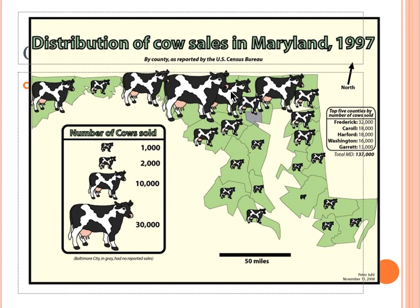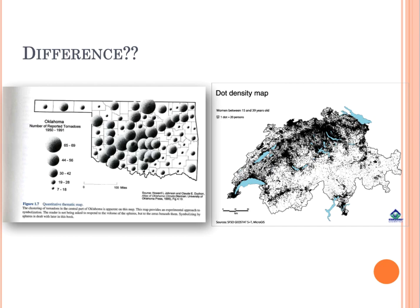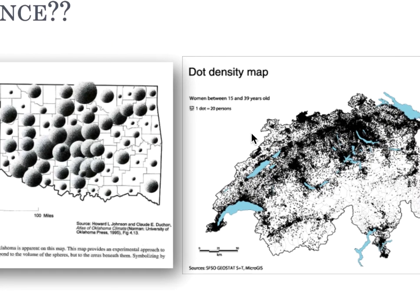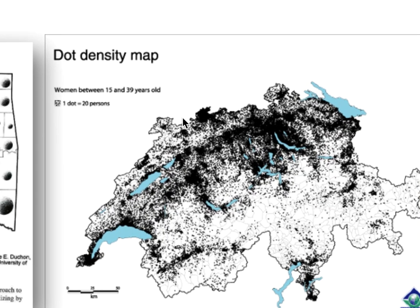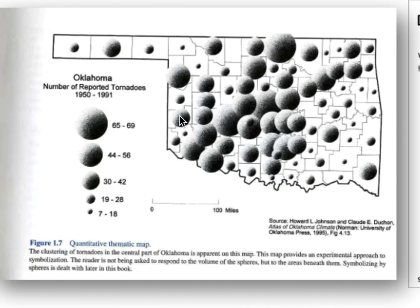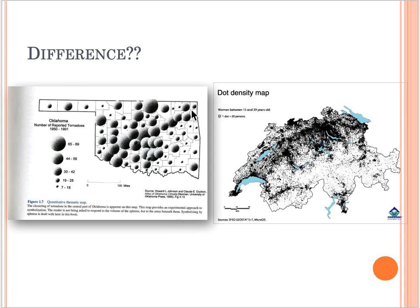These are the differences between a dot density map and a proportional symbol map. As stated, in the dot density map one dot equals 20 persons, whereas in the proportional symbol map we are looking at tornado count.